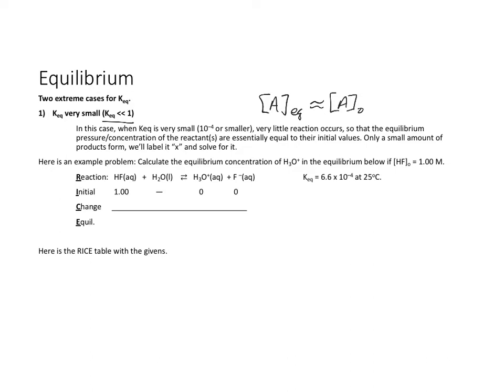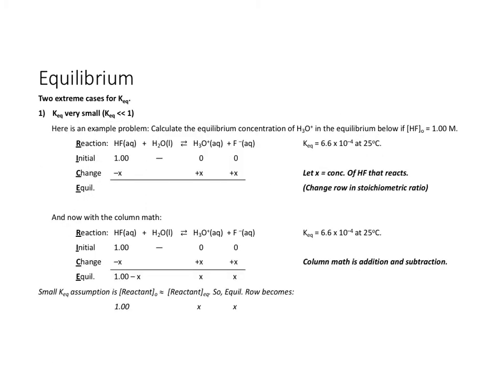Here's an example problem. Let's calculate the equilibrium concentration of hydronium H3O+ in this reaction, if the initial concentration of HF is one molar. So here's our RICE table. Reaction, initial, change, equilibrium. We put our initial conditions in. Those are our givens.